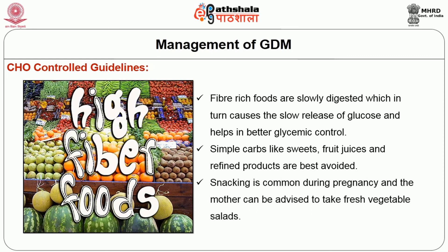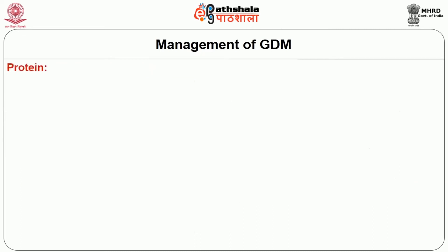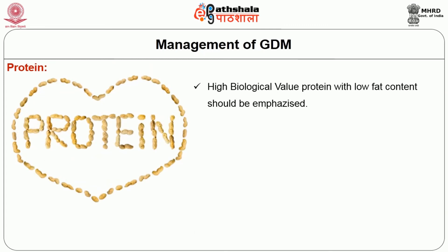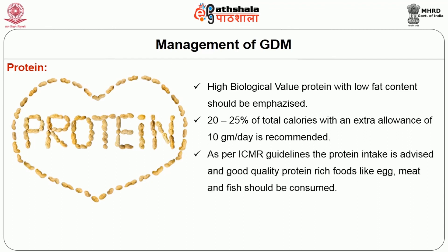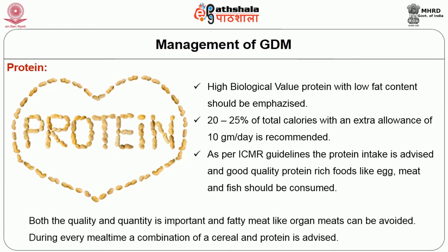Our next nutrient is protein. Protein is very important in a day's diet, and high biological value protein with low fat content should be emphasized. A 20–25% of total calories with an extra allowance of 10 grams per day of protein is recommended. As per ICMR guidelines, good quality protein-rich foods like egg, meat, and fish should be consumed. Both quality and quantity are important, and fatty meats like organ meats can be avoided. During every meal, a combination of a cereal and protein is recommended.